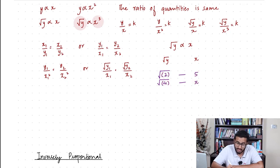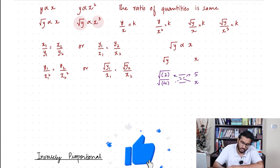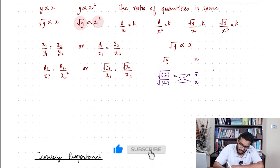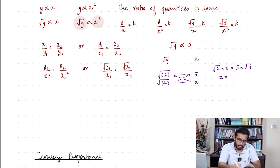When applying the proportionality method, I have to make sure I'm using the root on y because it was √y proportional to x, not y proportional to x. Now you can cross-multiply, and it will look like this: √2 times x equals 5 times √4. From here, you can find the value of x: x equals 5 times √4 divided by √2, which turns out to be 7.07. So you can use direct proportionality to solve many questions.